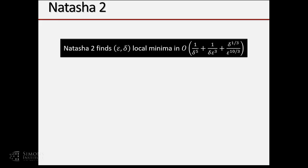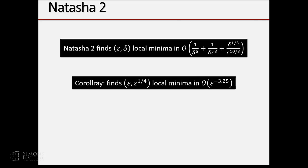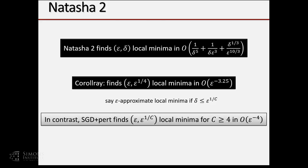Tuning the parameters between the two cases, the final theorem is: Natasha 2 finds an epsilon-delta local minima in this number of rounds. As a simple corollary, choosing delta = epsilon^(1/4), the number of back-propagations is epsilon^(-3.25). This is a strict improvement over stochastic gradient descent, which finds local minima in one over epsilon to the fourth power in the same setting.